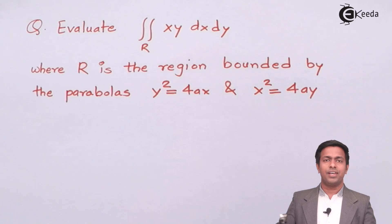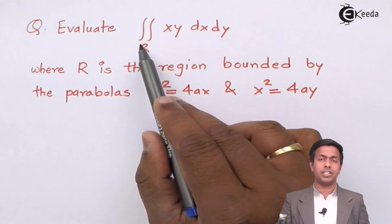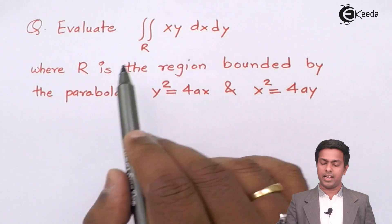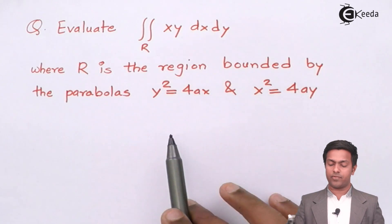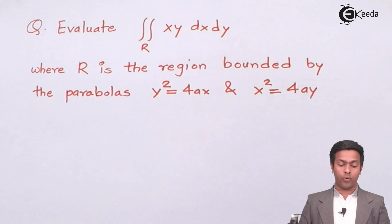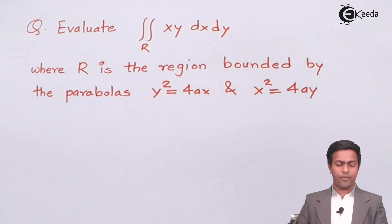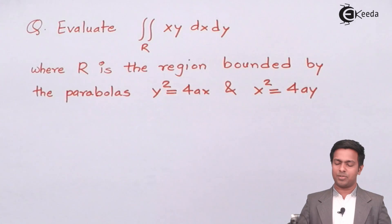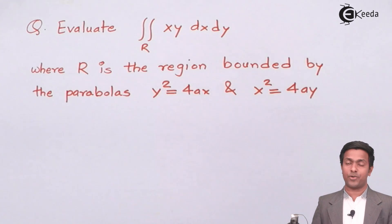We have the double integral of xy dx dy over the region R, where R is the region bounded by the parabolas y² = 4ax and x² = 4ay.